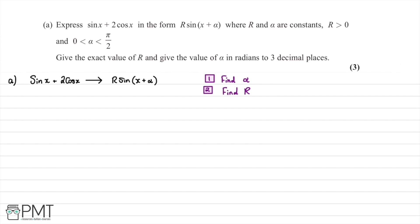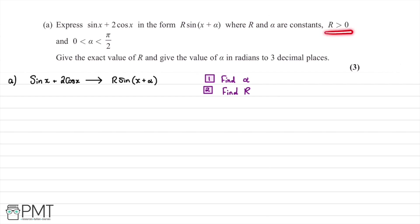In this question, we're told to express sin x plus 2 cos x in the form r multiplied by sin x plus alpha, where r and alpha are both constants, r is positive, and alpha is between 0 and pi over 2. We're told to give the exact value of r and the value of alpha in radians to three decimal places.